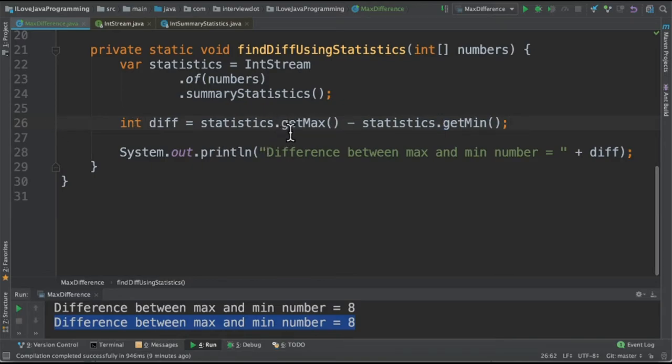So in line number 26 we are going to calculate the difference between max and the minimum. The result will be stored in this variable and we are going to print it in the console.